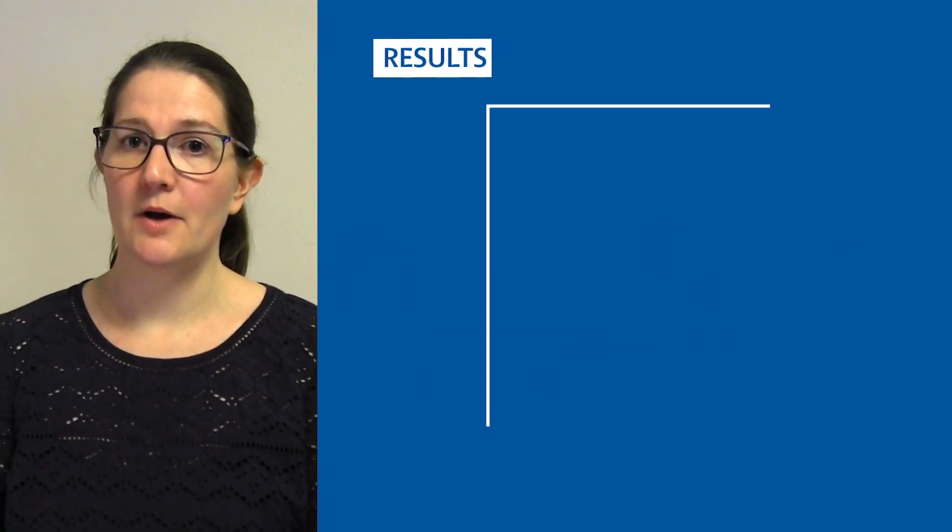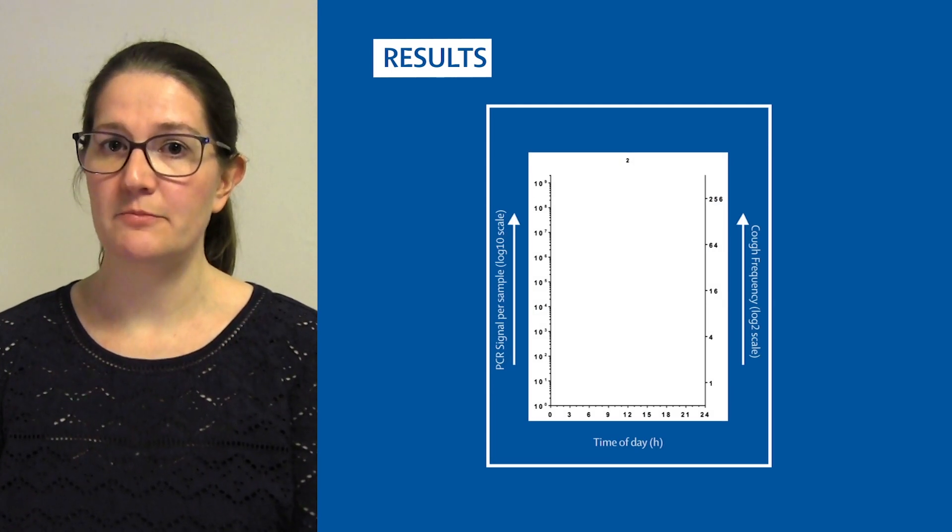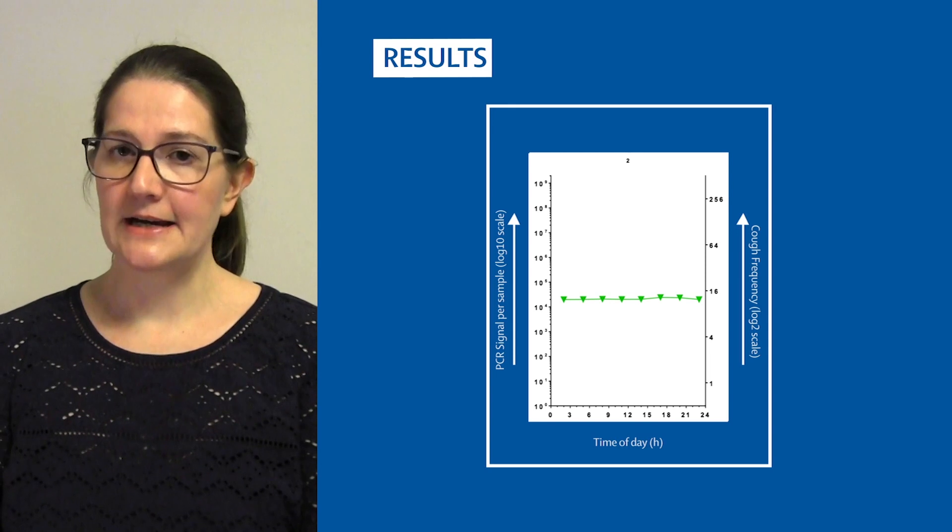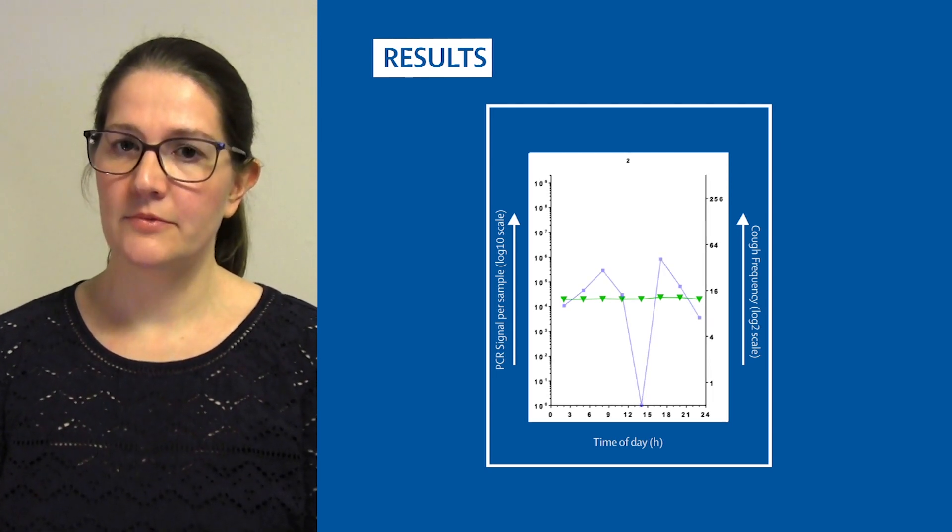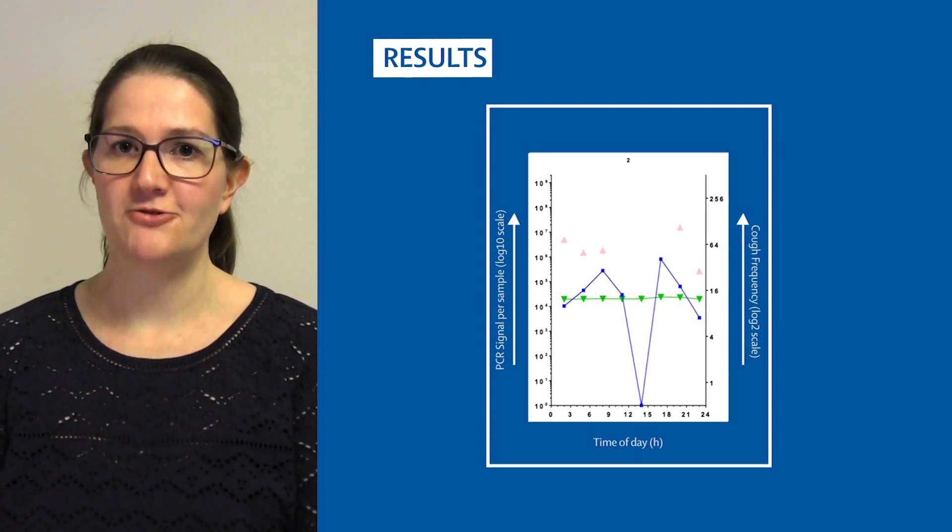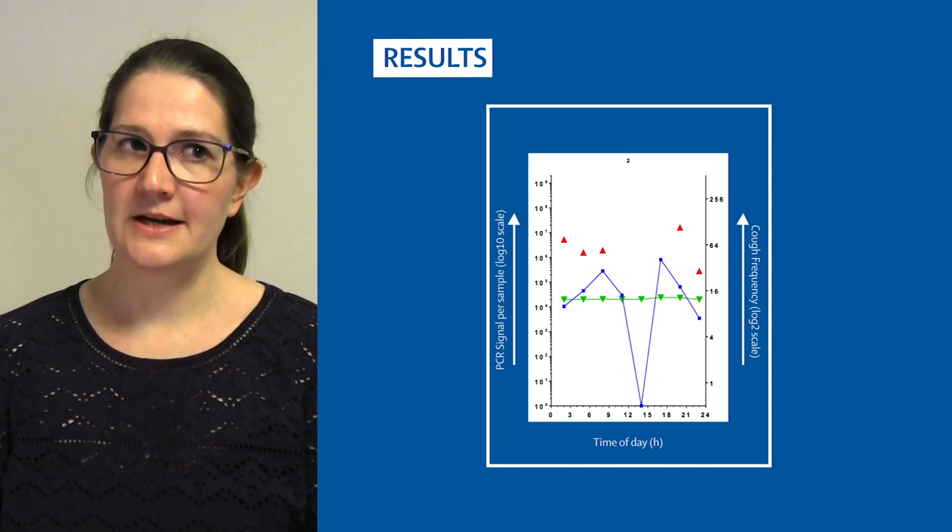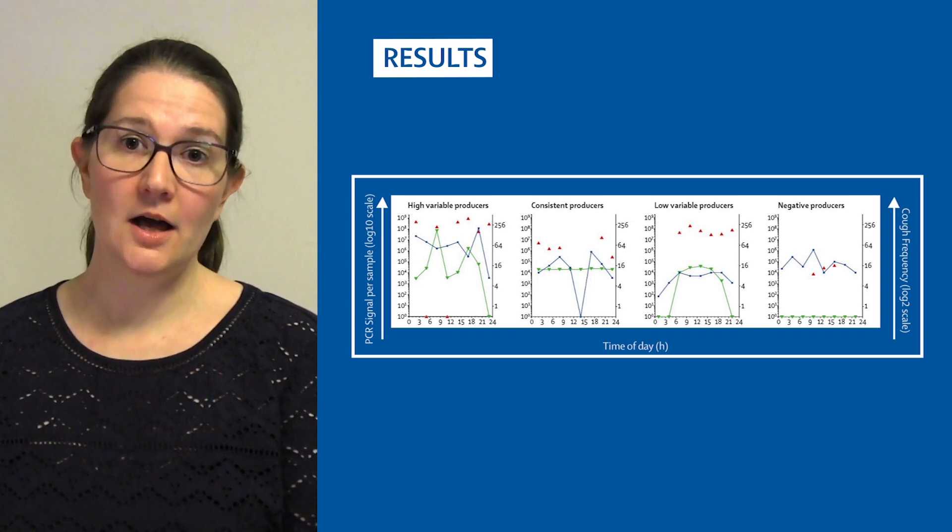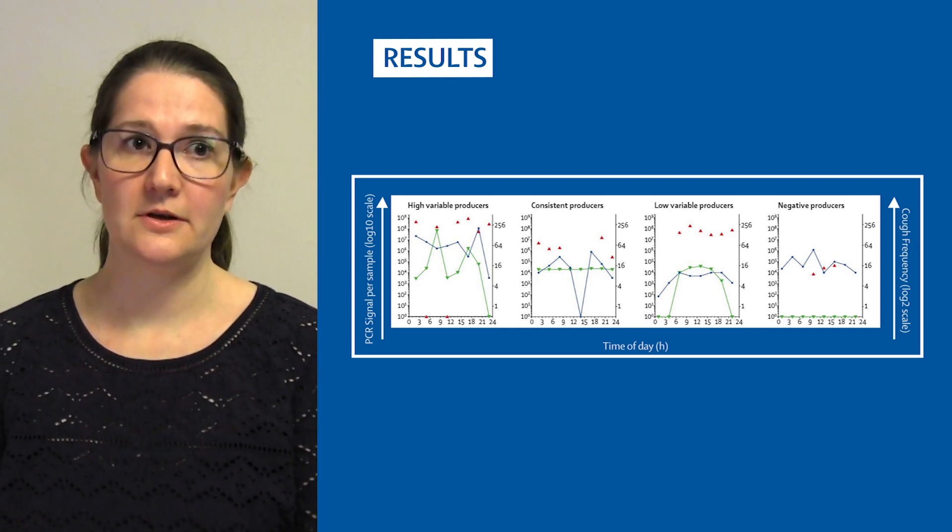These graphs show mycobacterial output in sputum and breath alongside cough frequency for a full day. The green line shows mask output, the blue shows cough frequency, and the red triangles show sputum output. Whilst most patients exhaled a consistent bacterial level, variable high, low, and negative patterns were also observed.